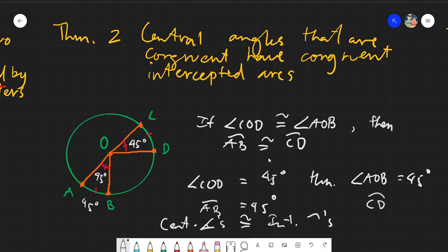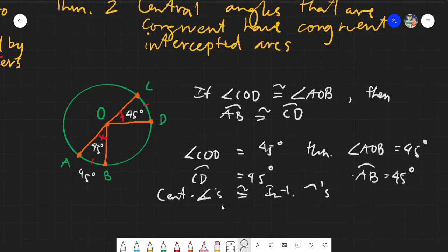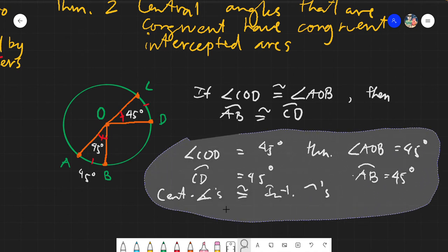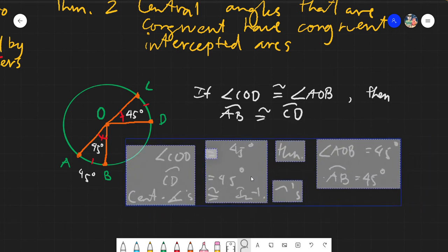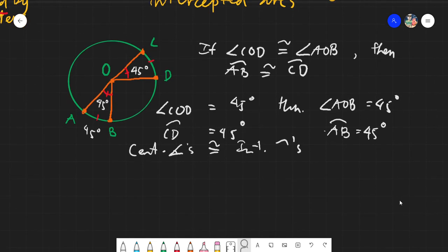Let's dumb it down a little bit. If we have central angles — plural — and we have intercepted arcs, and the central angles are congruent, then everything else is congruent. If we have congruent central angles, then all the intercepted arcs are also congruent — everything is congruent. If we have this case: 45 for one, then 45 for all. But this would only work if and only if the central angles are congruent.